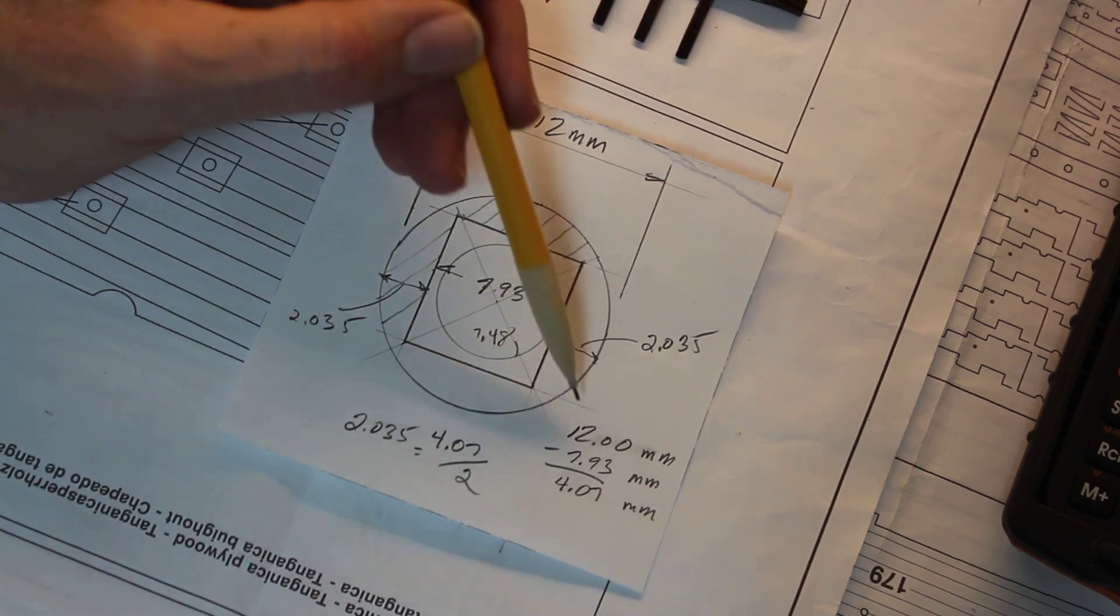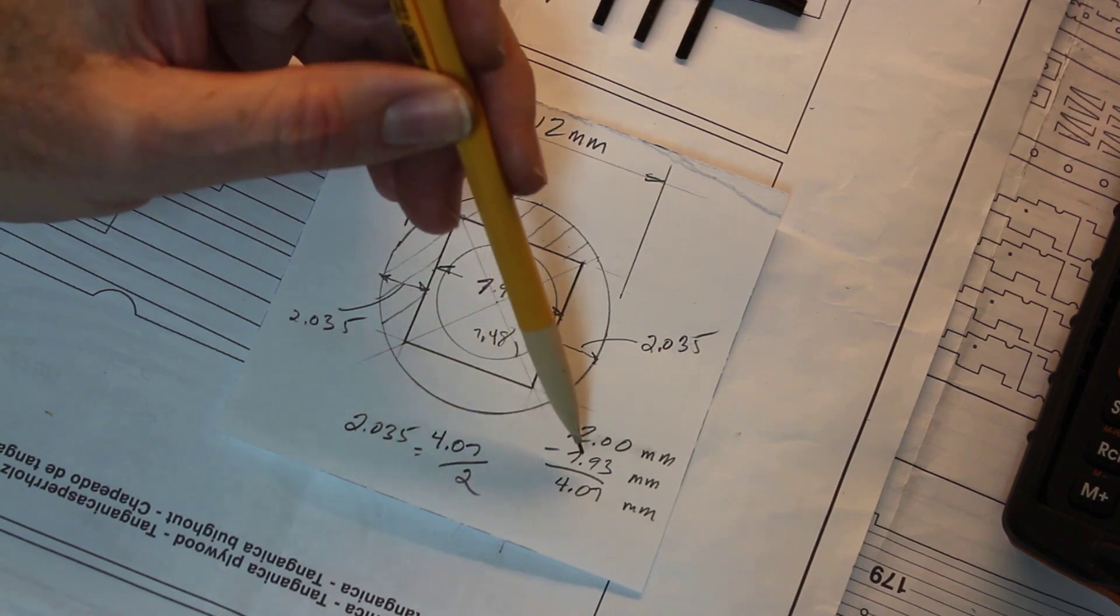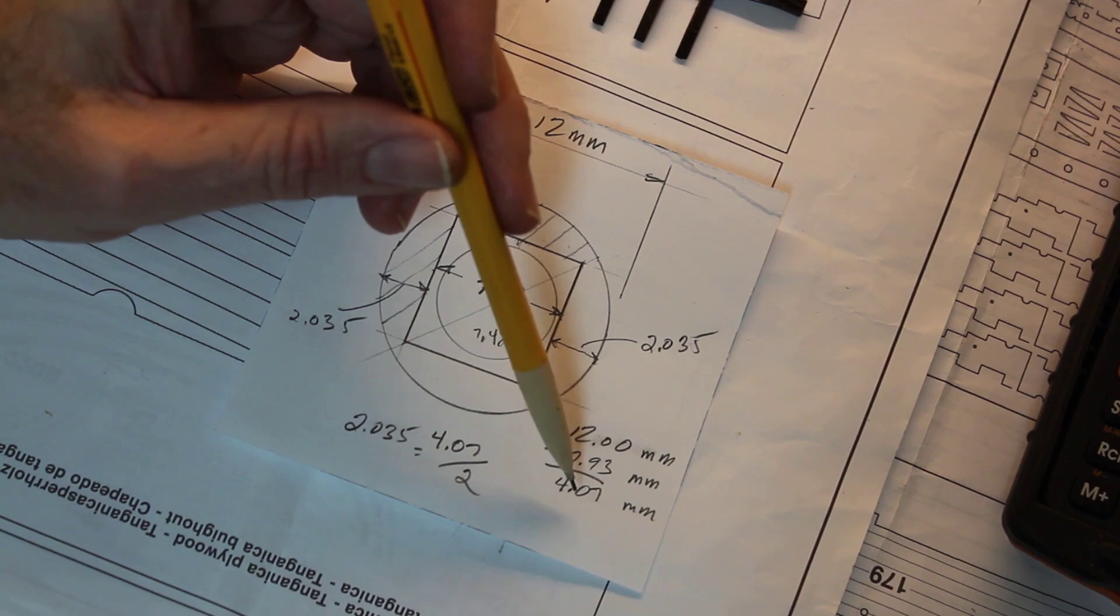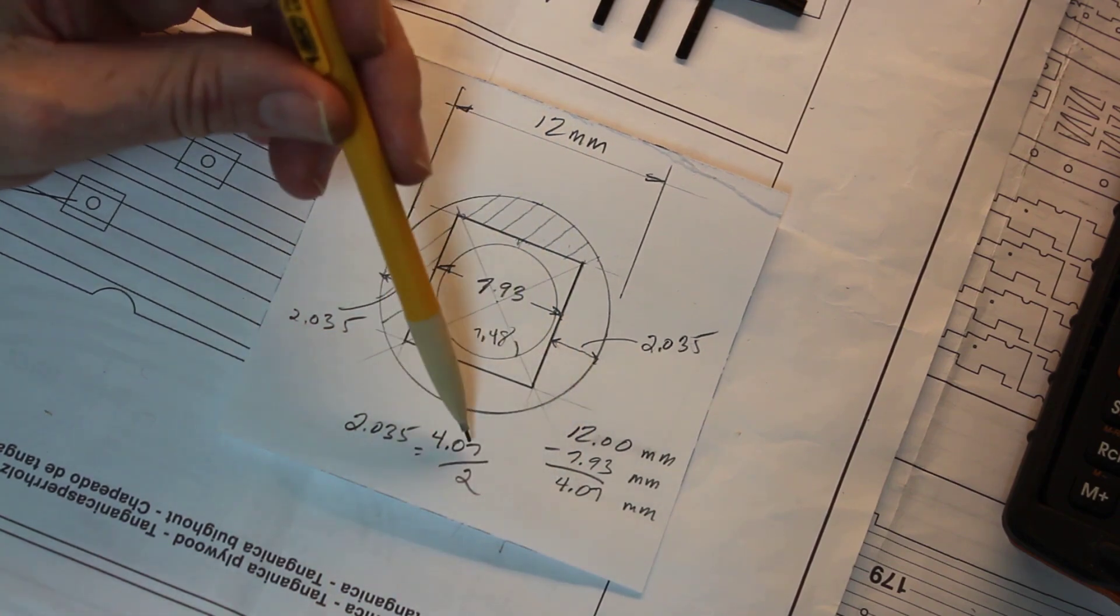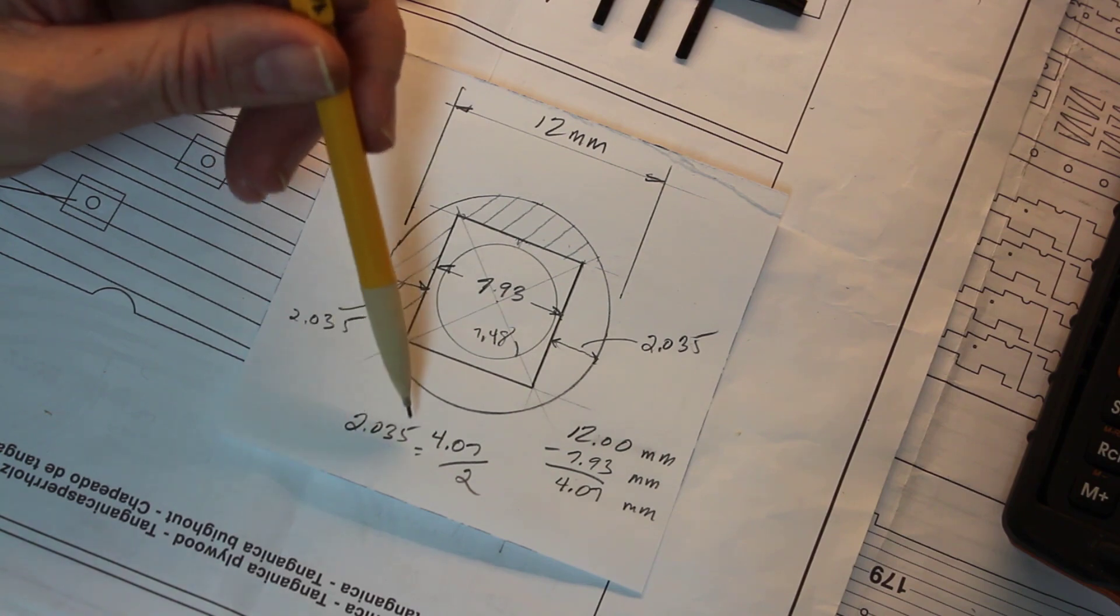So we take the 12 millimeters, subtract 7.93, and get 4.07. Then we divide 4.07 by 2, which gives us 2.035.